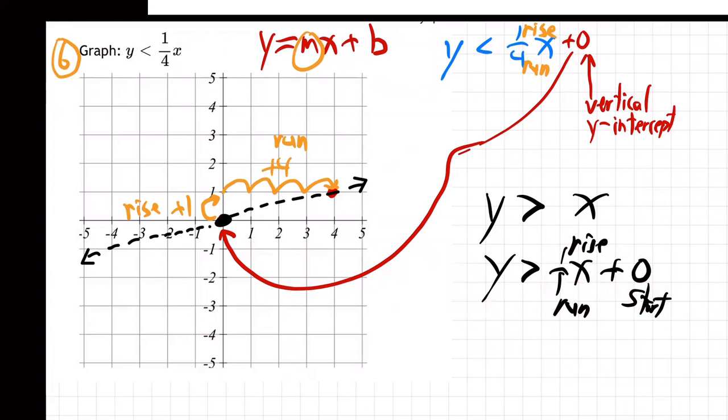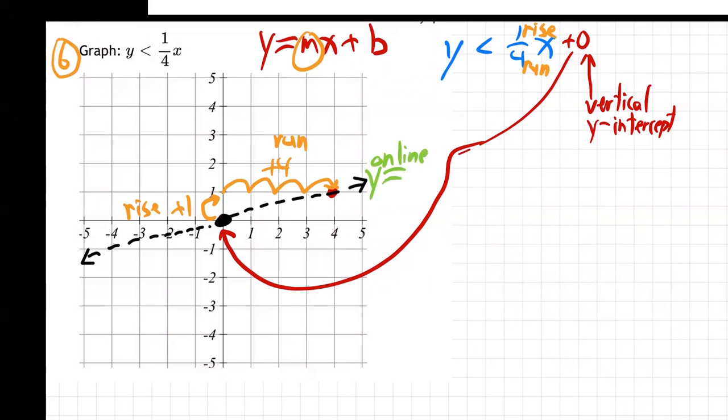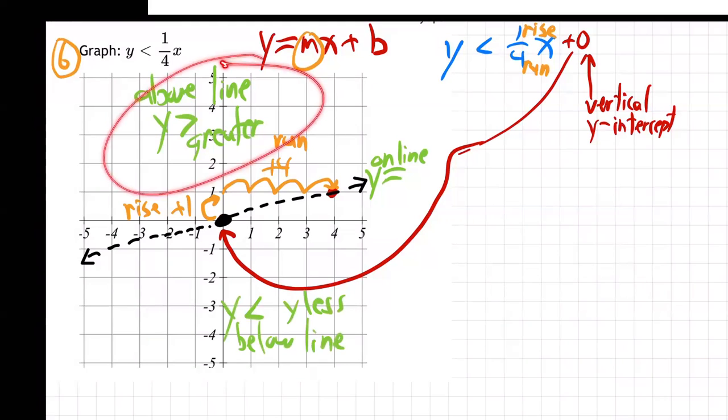And then let's finish this up. We got to do the shading now. So the last thing is the shading. So let me make this clear. So remember, there's three zones. There is right on the line. That's the Y equals in this case one fourth. I'll just call it equals. That's the Y equals right on the line. On the line is Y is greater, above, above the line, greater. Greater stuff is above the line and Y less, that's below the line. Y less is below the line. So there's three zones above. Above the line is Y greater.